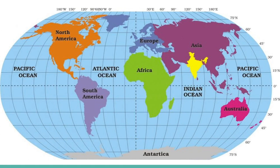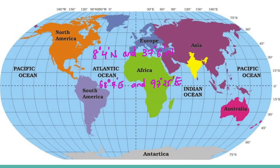India is a vast country and lies entirely in the northern hemisphere. The mainland extends between latitudes of 8°4' North and 37°6' North, and longitudes of 68°7' East and 97°25' East. The Tropic of Cancer divides the country into almost two equal parts.